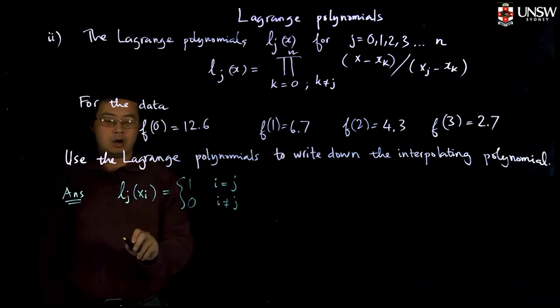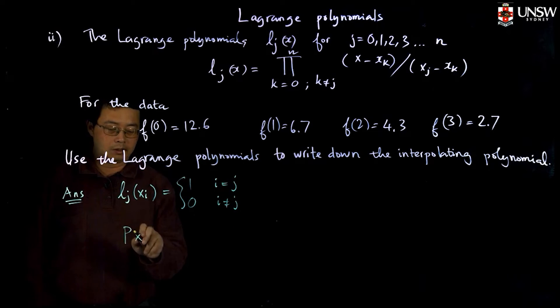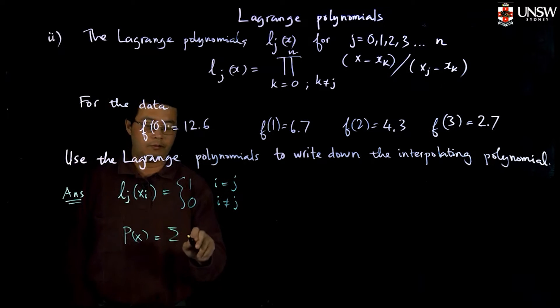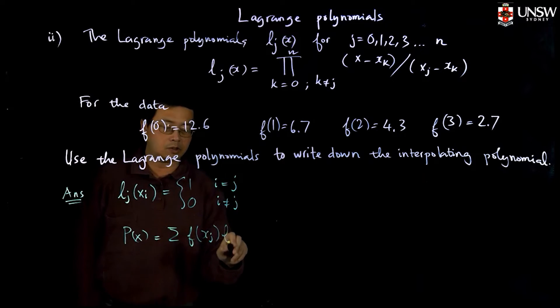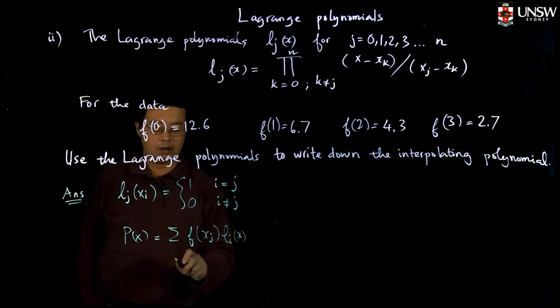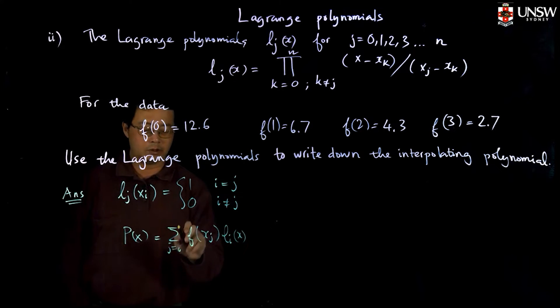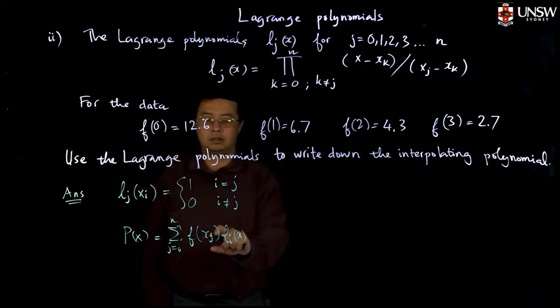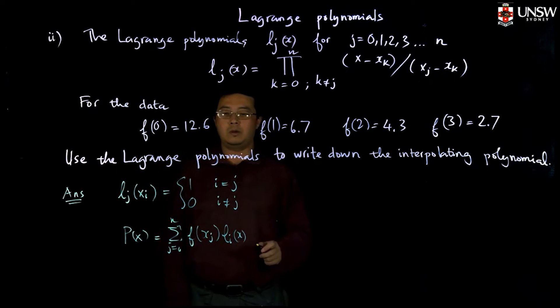Now if I define a polynomial P(x) equal sum of f(x_j) times l_j, j from 0 to n, then you will see that this is the interpolation polynomial.